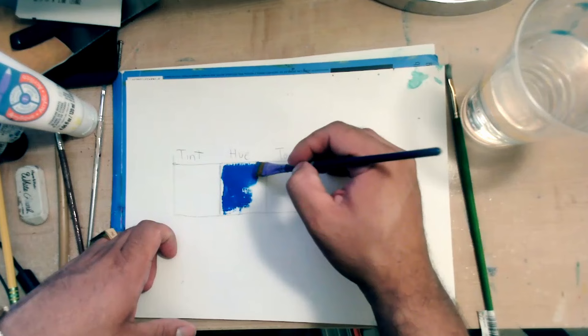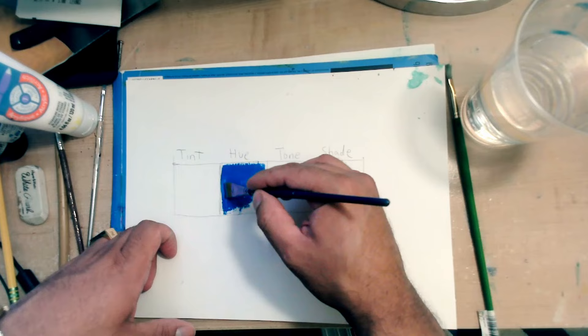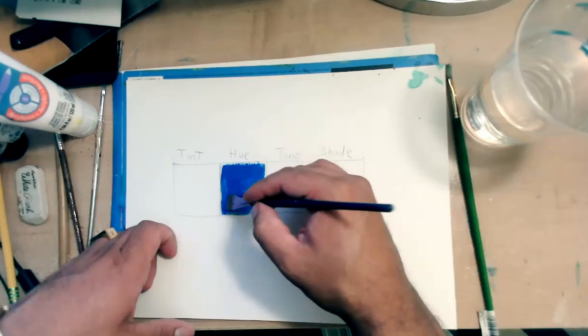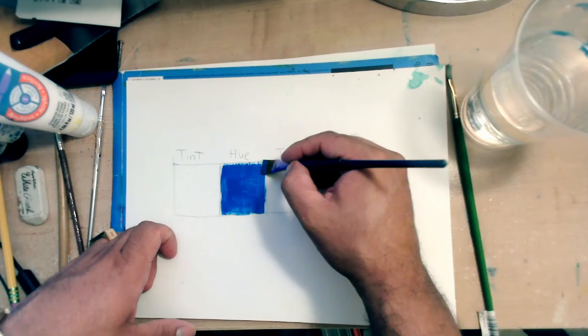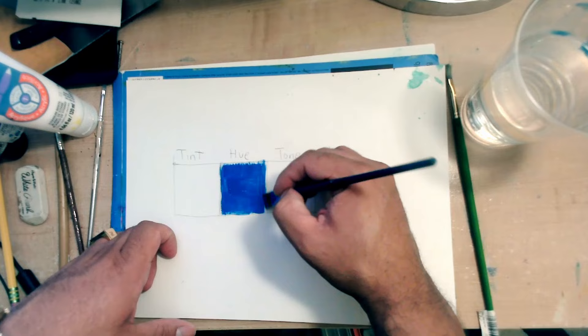And I can spread my paint on the square. A little bit more. And since this area is square, I like to use square brushes. All right, there it is. That's going to be my hue of blue.